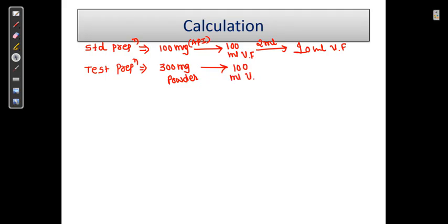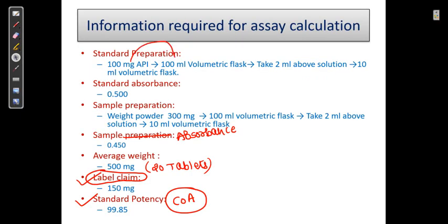Transfer it into 100 ml volumetric flask. From that, 2 ml is transferred into a 10 ml volumetric flask. The absorbance of standard is 0.5 and test is 0.4.